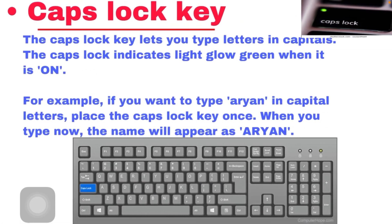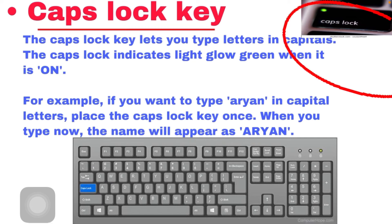After the enter key, there is the caps lock key. So what is the function of the caps lock key? The caps lock key is mainly used for writing any type of letter in capital. If you want to write any sentences in capital letters, you must press the caps lock key. Whatever you then type on the keyboard will be written in capital letters. The caps lock key lets you type letters in capitals. The caps lock indicator light glows green when it is on. Whenever the caps lock key is on, the green light is always on, but if caps lock key is off, the green light is also off.